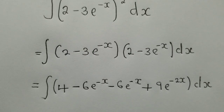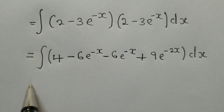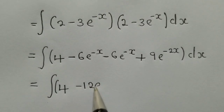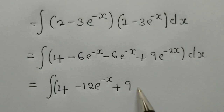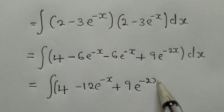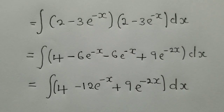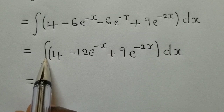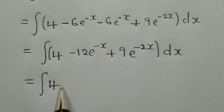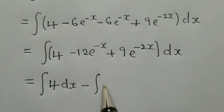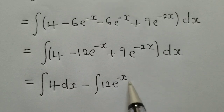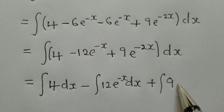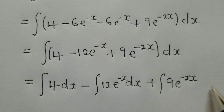Now from this stage we clean up our work. We say equal to integral of 4 minus 12e^(-x) plus 9e^(-2x) dx. The power 2 has gone. The next thing is to distribute the integral sign: the integral of 4 dx, minus the integral of 12e^(-x) dx, plus the integral of 9e^(-2x) dx.